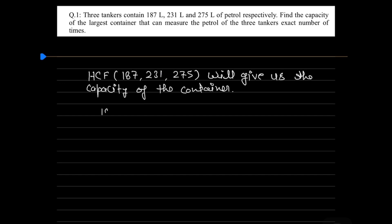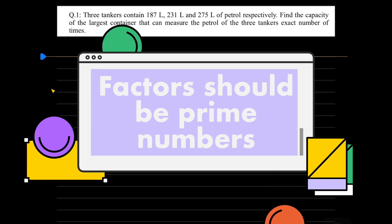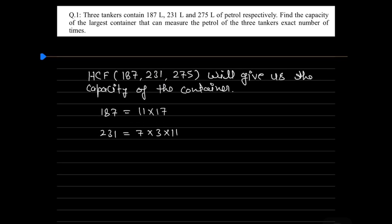Now write the prime factors. The factors of 187 are 11 into 17. Then 231 factors are 7 into 3 into 11, and 275 factors are 5 into 5 into 11, that is 5 power 2 into 11. Now HCF is always equal to common factor of least power, so HCF equals to common factor of the three is 11 and least power of 11 is 1.